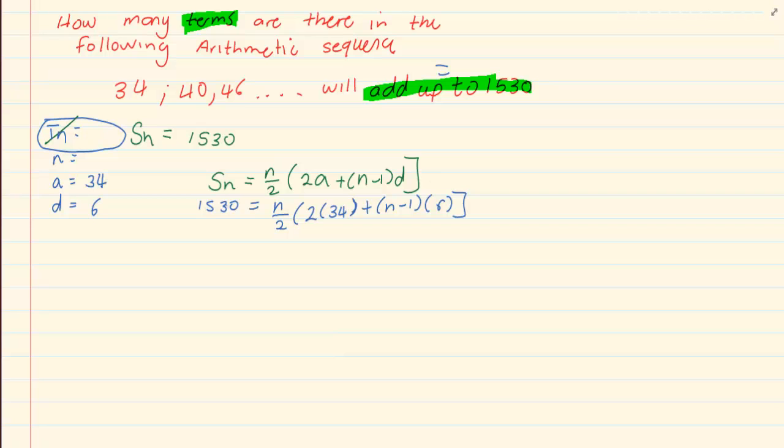So we have 1530 equals to n over 2 into 2 times 34 plus (n minus 1) times 6. Once you do the distributive law, which is a section we had covered in grade 10, we get rid of all the brackets. We would have 34n plus 3n squared minus 3n. If you are not familiar with how I had moved from this step to this step, then you have to go over the grade 10 and 11 solve for x, simplifying and factorizing.